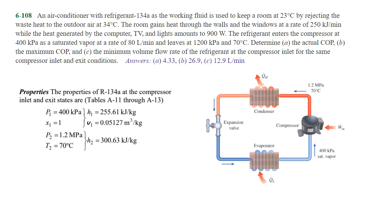For the same compressor inlet and exit conditions, the first things we need to figure out are the actual values for enthalpy and specific volume. Here we have a picture from the book of the actual system itself. Coming into the compressor we have 400 kilopascals saturated vapor, and coming out of the compressor going into the condenser it's 1.2 megapascals at 70 degrees C.